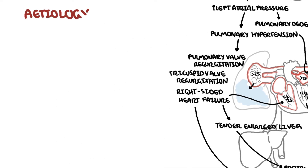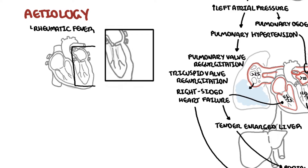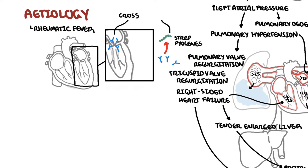The etiology of mitral stenosis is many; however, rheumatic fever is the most common cause, leading to rheumatic heart disease. Rheumatic fever is caused by Streptococcus pyogenes. Antibodies are produced, but unfortunately there is molecular mimicry between the heart valves and the M protein of Strep pyogenes, causing a cross-reaction and subsequent rheumatic heart disease.